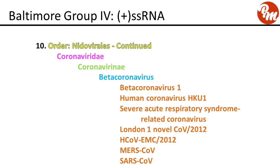Continuing in family Coronaviridae, subfamily coronavirinae, genus beta coronavirus. This includes beta coronavirus 1, human coronavirus HKU1, severe acute respiratory syndrome-related coronavirus, London 1 novel coronavirus 2012, HCoV-EMC 2012, Middle Eastern respiratory syndrome coronavirus (MERS-CoV), and SARS-CoV.